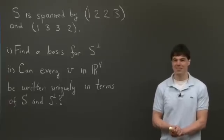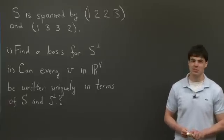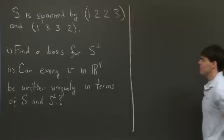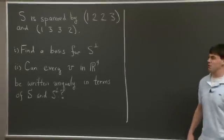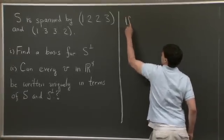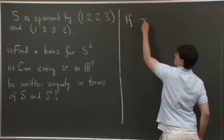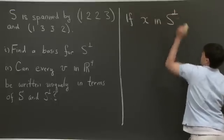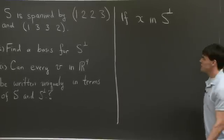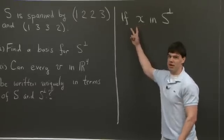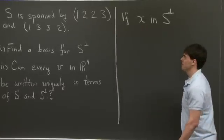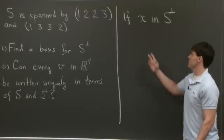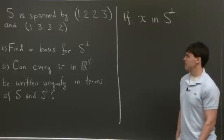Hi, everyone. Welcome back. Okay, so why don't we tackle this problem? Okay, so first off, what does it mean for a vector to be in S perp? Well, if I have a vector x in S perp, what this means is x is going to be orthogonal to every vector in S. Now, specifically, S is spanned by these two vectors.